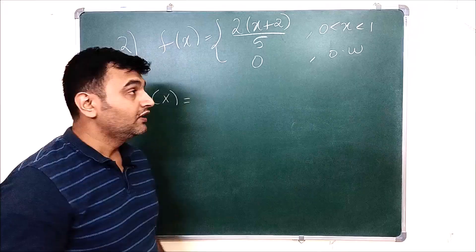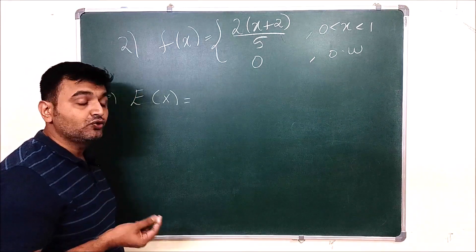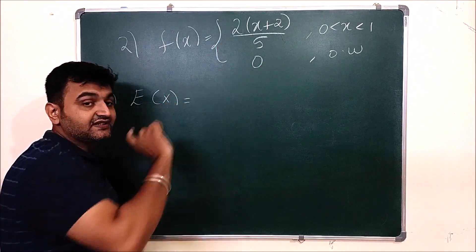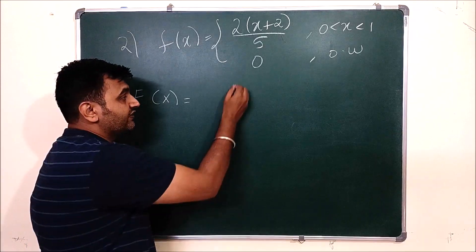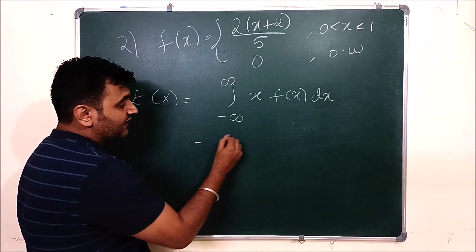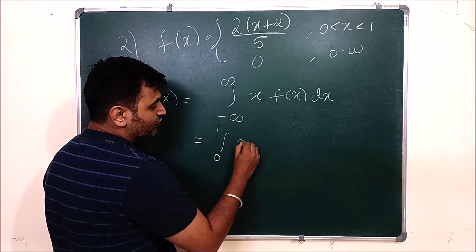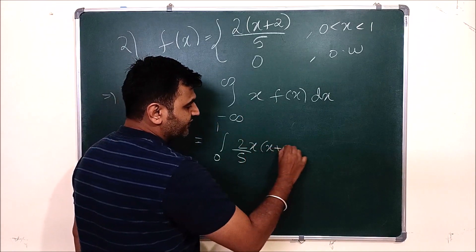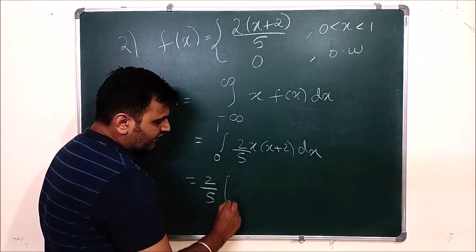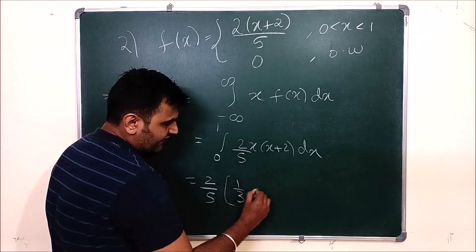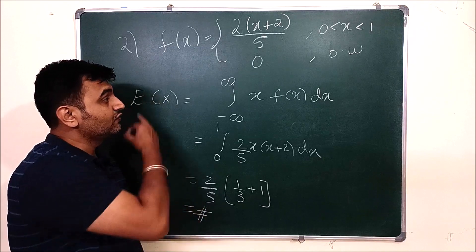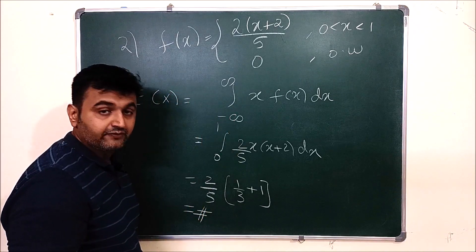Here a joint PDF is given — from zero to one it takes a certain value, otherwise zero. Since it is a continuous random variable, E[X] = integral from minus infinity to infinity of x·f(x) dx. Since f(x) is nonzero only from 0 to 1, this becomes the integral from 0 to 1 of (2/5)·x·(x+2) dx. Expanding: integrate x² and x terms — x³/3 and x²/2 — giving the final numerical answer.